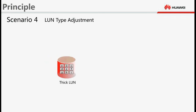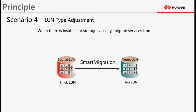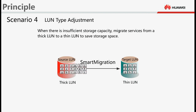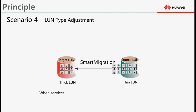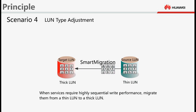For LUN type adjustment, when there is insufficient storage capacity, migrate services from a thick LUN to a thin LUN to save storage space. When services require highly sequential write performance, migrate them from a thin LUN to a thick LUN.